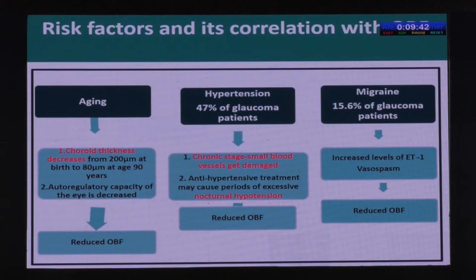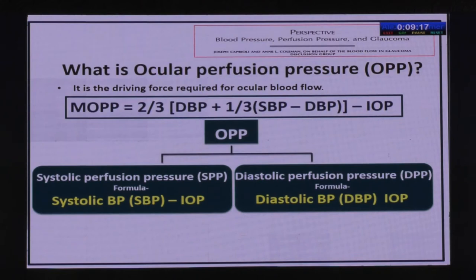15.6% of glaucoma patients have migraine. Both diseases have increased levels of endothelin-1. Endothelin-1 causes vasospasm and vasoconstriction of the trabeculum, and also constriction of the trabecular meshwork, thereby raising intraocular pressure. Together, these mechanisms again lead to reduced ocular blood flow.